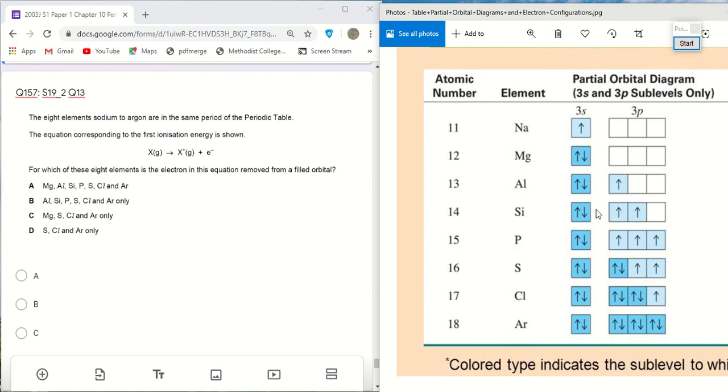Now, removing the first electron, for example, look at sodium. The first electron is removed from 3s orbital, right? And the 3s orbital is not filled because there is only one electron, it's not fully filled. So sodium cannot be one of the answers because the first electron is removed from a half-filled orbital only, not a filled orbital.